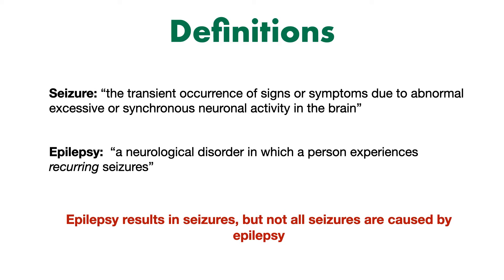Moving on to think about epilepsy, there are several definitions, but quite simply, it's a neurological disorder in which a person experiences recurring seizures. Recurring is a really important part of defining epilepsy — patients need to have multiple seizures or have an increased risk of having a seizure. It's very important to remember that epilepsy results in seizures, but not all seizures are caused by epilepsy, and we're going to explore this in more detail later.